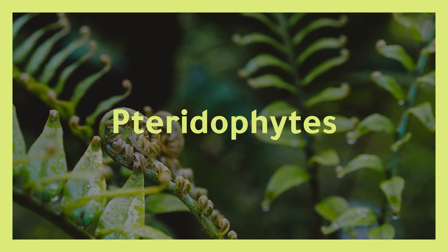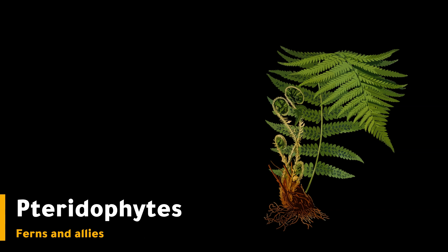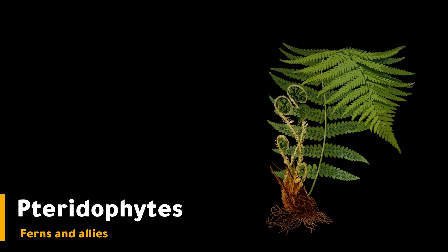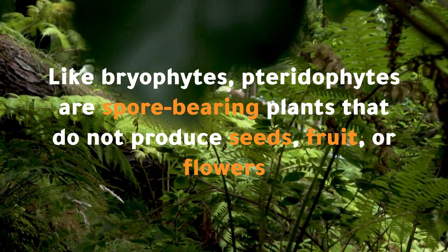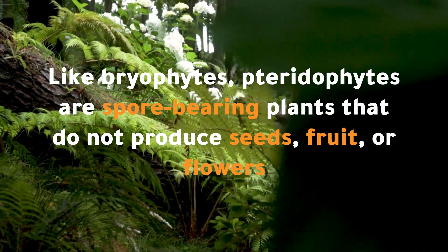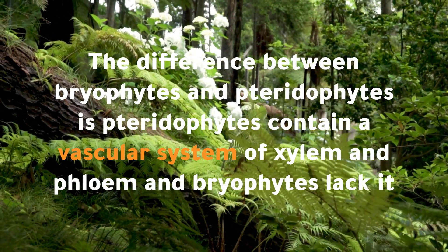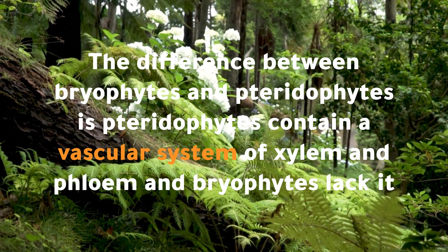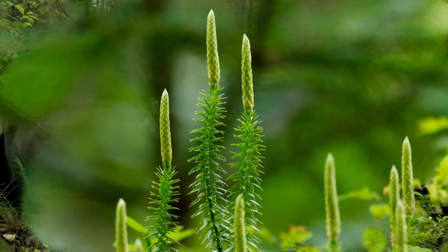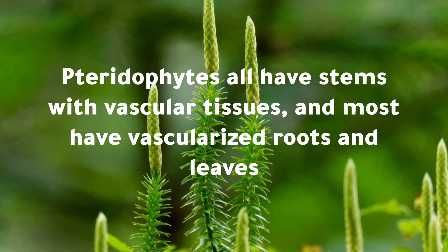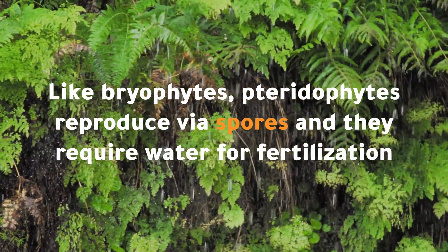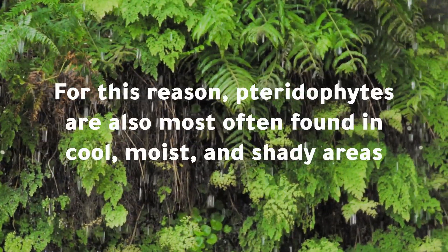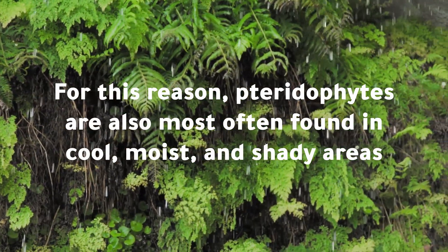Pteridophytes. The group pteridophytes is the fern and ally group. Pteridophytes are generally divided into two main groups: the lycophytes and monilophytes. Like bryophytes, pteridophytes are spore-bearing plants that do not produce seeds, fruit, or flowers. The difference is that pteridophytes contain a vascular system of xylem and phloem, whereas bryophytes lack it. Pteridophytes have stems with vascular tissues, and most have vascularized roots and leaves. Like bryophytes, pteridophytes reproduce via spores and require water for fertilization, so they are also most often found in cool, moist, and shady areas.